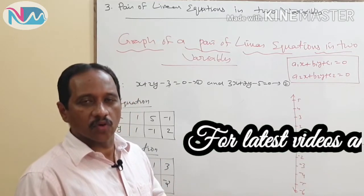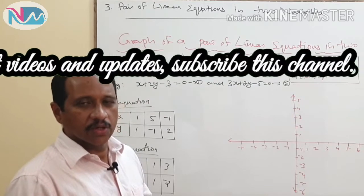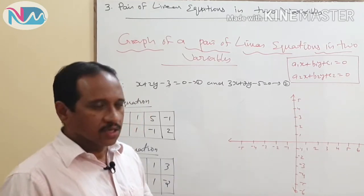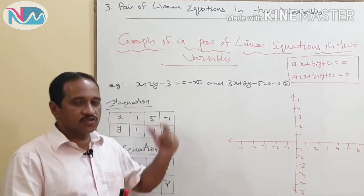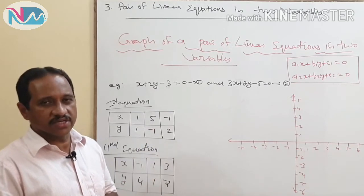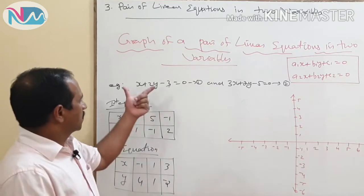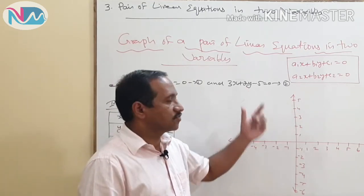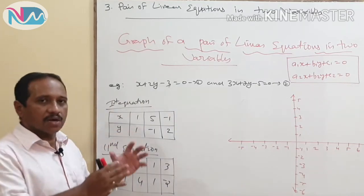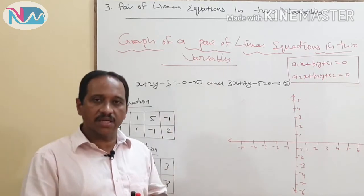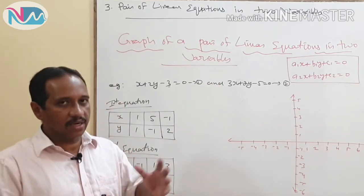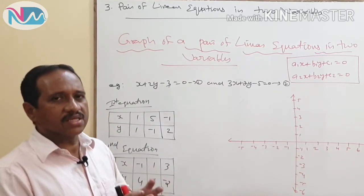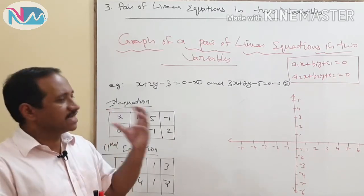Now let us see what is the graph of a pair of linear equations in two variables. You know that the graph of a linear equation in two variables is a straight line, which you learned in class 9. Here we have two equations — x plus 2y minus 3 equals 0 and 3x plus 2y minus 5 equals 0 — called a pair of linear equations or a system of linear equations in two variables. If you draw the graph of each equation, you get two straight lines. To draw the graph of the first equation, we need a set of solutions.